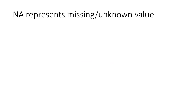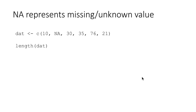NA represents a missing or unknown value. Here we are simulating it by creating a vector and throwing in an NA value — a missing value. When we do length() on that vector, it counts how many values are in the vector. There are 6 values: 3 plus 3. It's just that one of them happens to be an unknown value, but there are 6 elements in the vector and one of them is unknown.